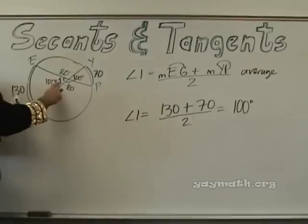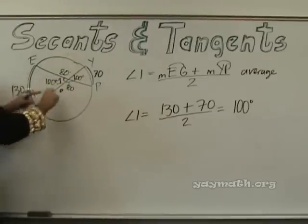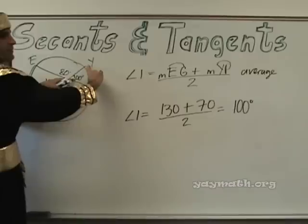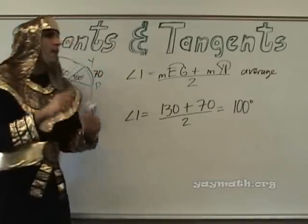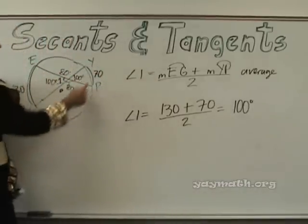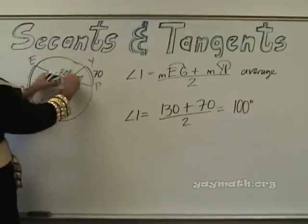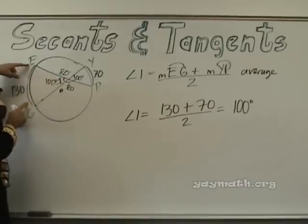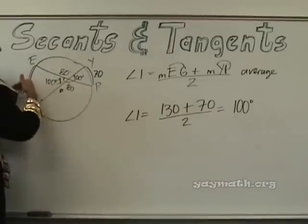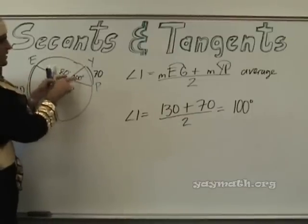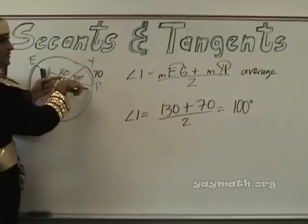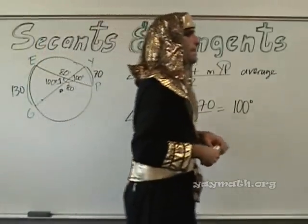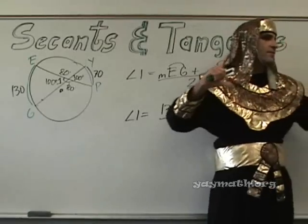Angle one — what arc does it lead to? This one. And angle one is also the same as the vertical angle, so it's this arc too. It's like a flashlight effect: angle one shines its light over the far arc and, because the vertical angle is the same, it shines onto the smaller arc as well. So we take the average of those two. It's always the average of two, because there are only two arcs in question.